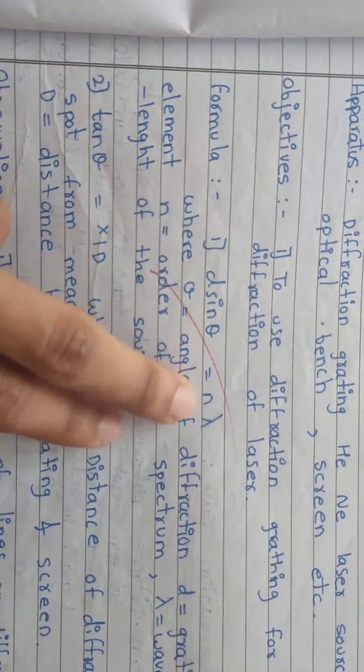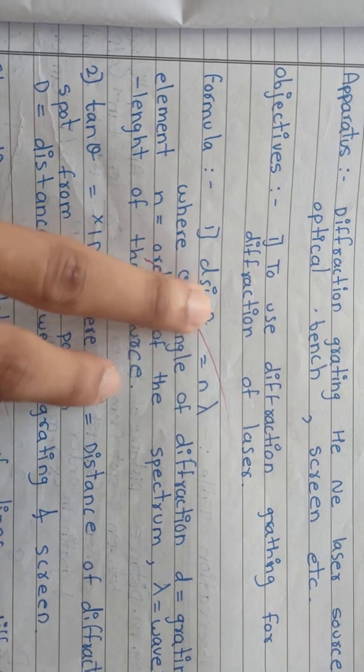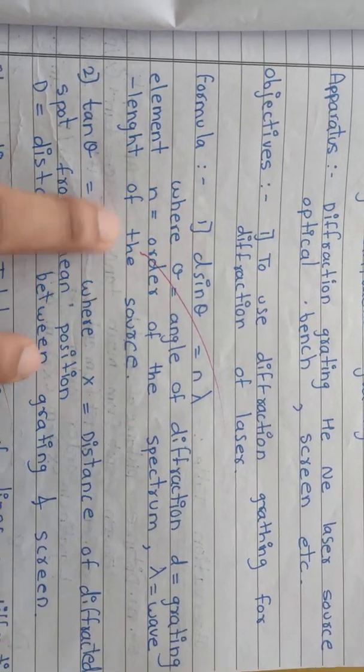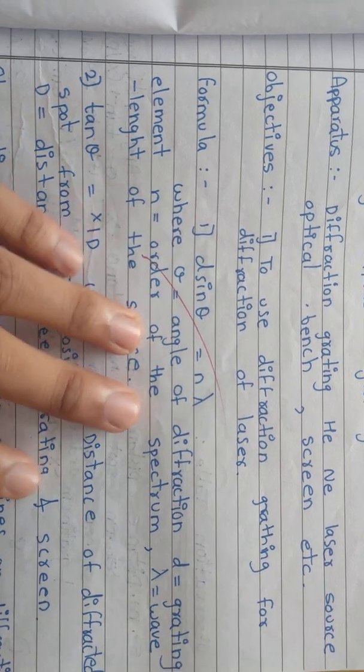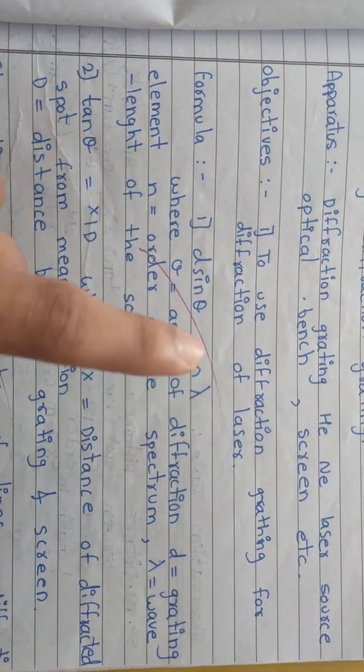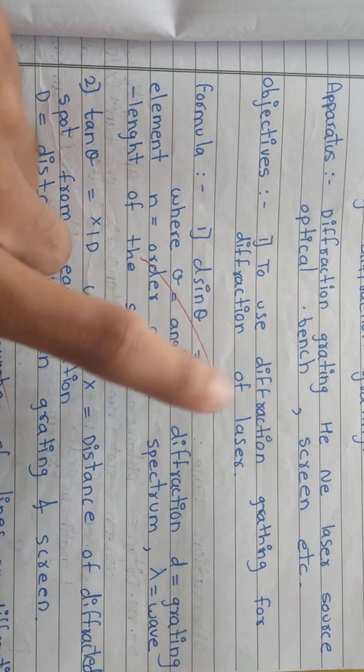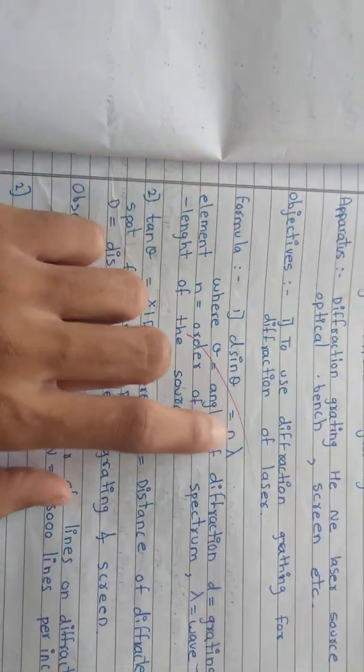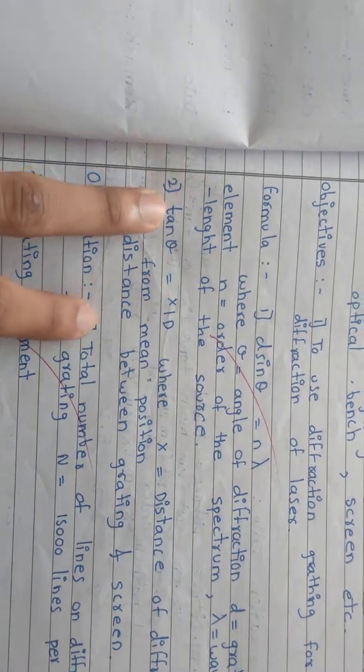The formula is d sine theta equals n lambda, where theta is angle of diffraction, d is grating element, n is order of spectrum, and lambda is the wavelength of the source.